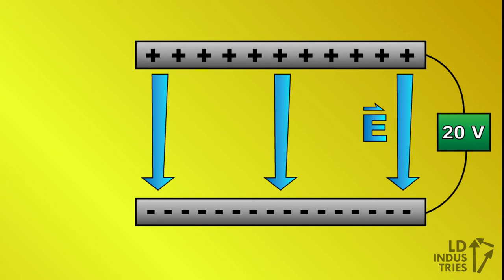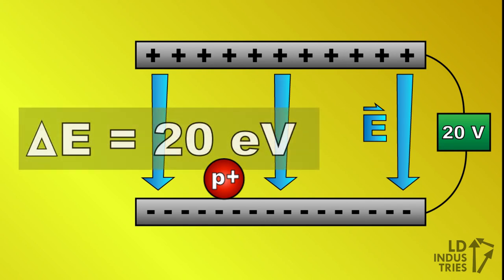So that means that an electron, or any particle with an elementary charge, that moves through an electric field made by, say, a 20 volt power supply gains 20 electron volts of energy. And this works for more than just electrons. If a proton is moved through this same electric field, it would also gain 20 electron volts of energy, since a proton has an elementary charge just like an electron.